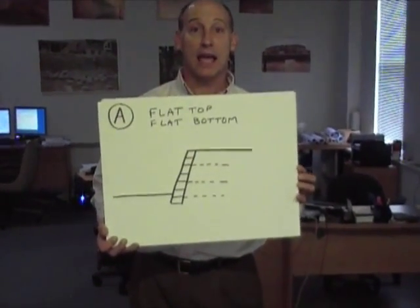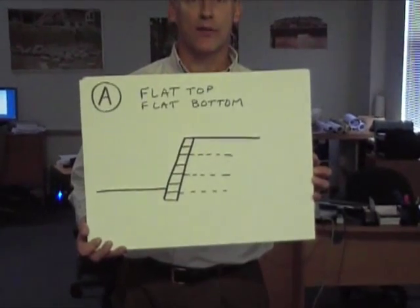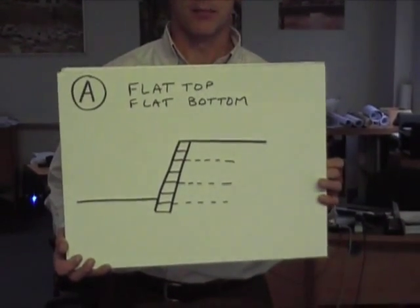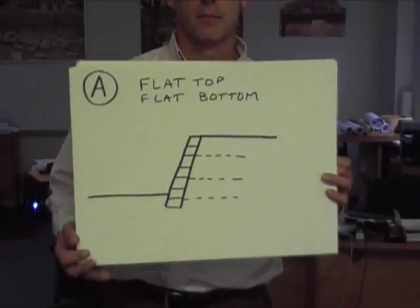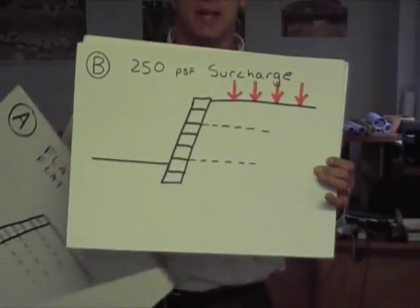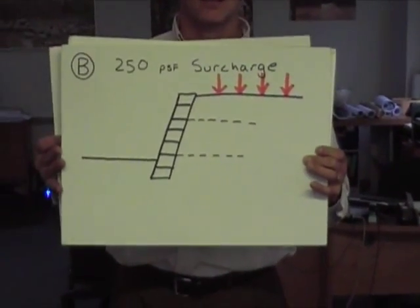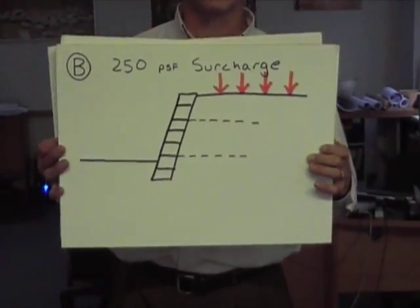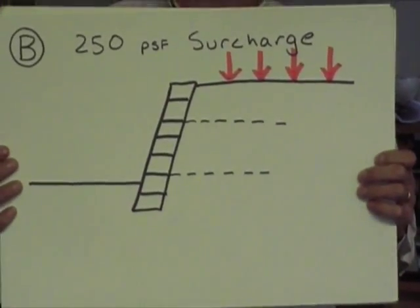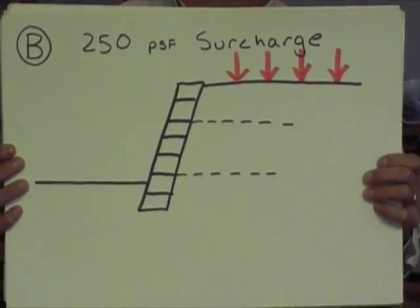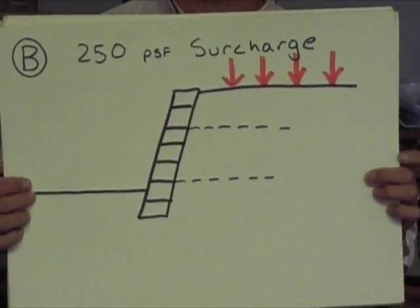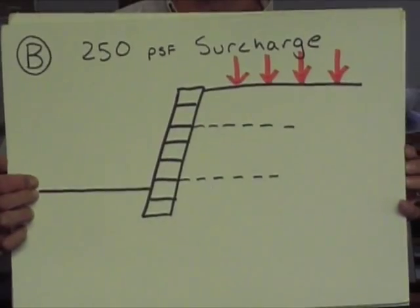Condition A is if you have a wall with a flat top and a flat bottom. Condition B is a wall with a flat top and a flat bottom but there's a surcharge above the wall, such as a pavement or a driveway.